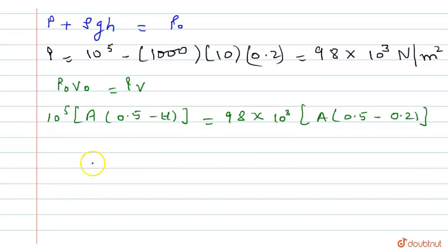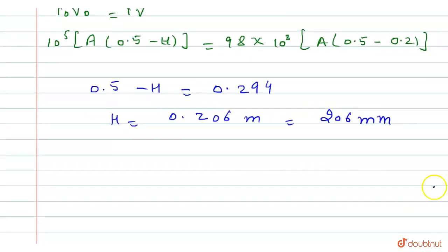And 0.5 - h = 0.294, so h = 0.206 meters. Now we convert it into mm: 206 mm.